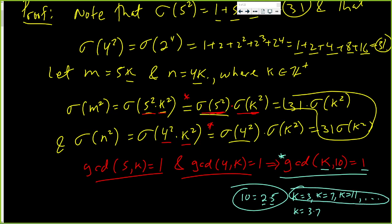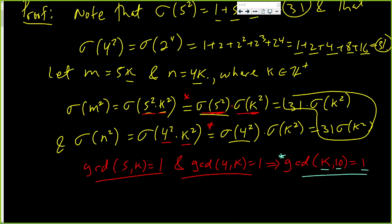Let k be primes different from 2 and 5 — and if it's different from 2, it's different from 4 as well. So as long as you pick a k where the GCD of k and 10 is 1, we have an infinite number of m's and n's whose sigma of their squares are equal. Which is really neat — this is quite amazing.